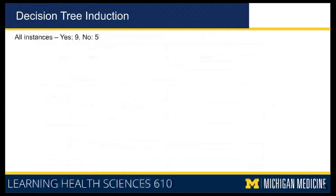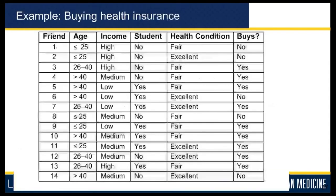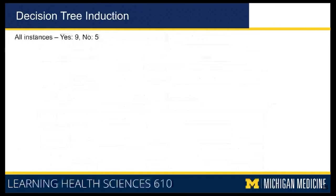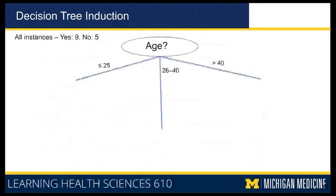In our dataset there are 14 instances — nine of them are positive (yes) and five are no. Suppose you choose age as your first decision node out of the four features: age, health condition, student, and income level. Age has three possible values: less than 25, between 26 and 40, and greater than 40.